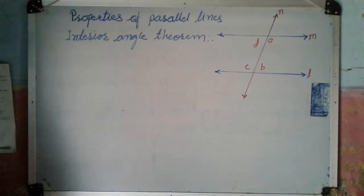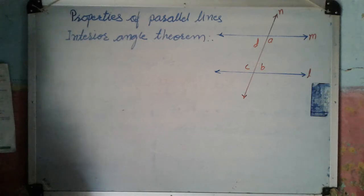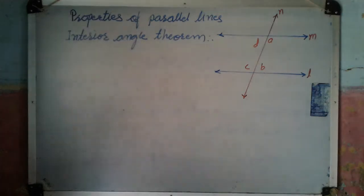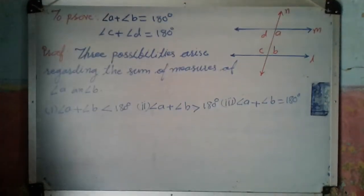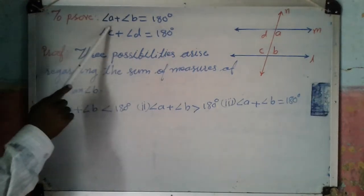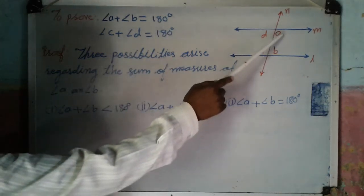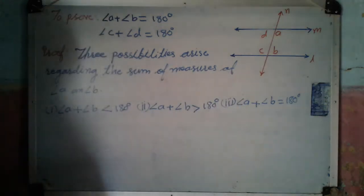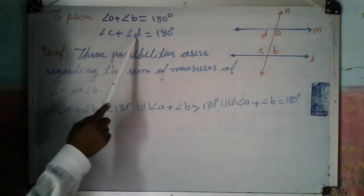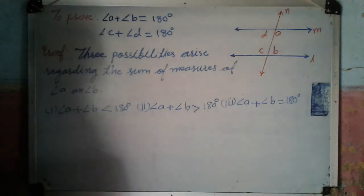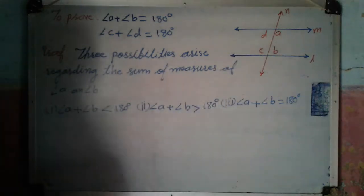Now, here we have to prove that angle A plus angle B is equal to 180 degrees, and angle D plus angle C is equal to 180 degrees. Angle A plus angle B are the interior angles on one side, and angle C plus angle D is equal to 180 degrees — this is the other pair of interior angles on the other side. That means all pairs are supplementary.